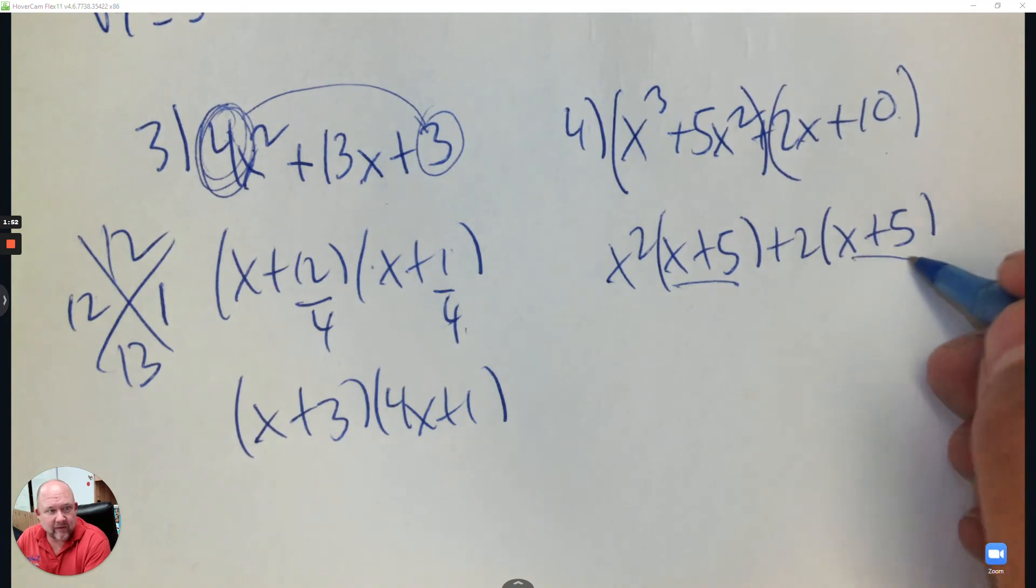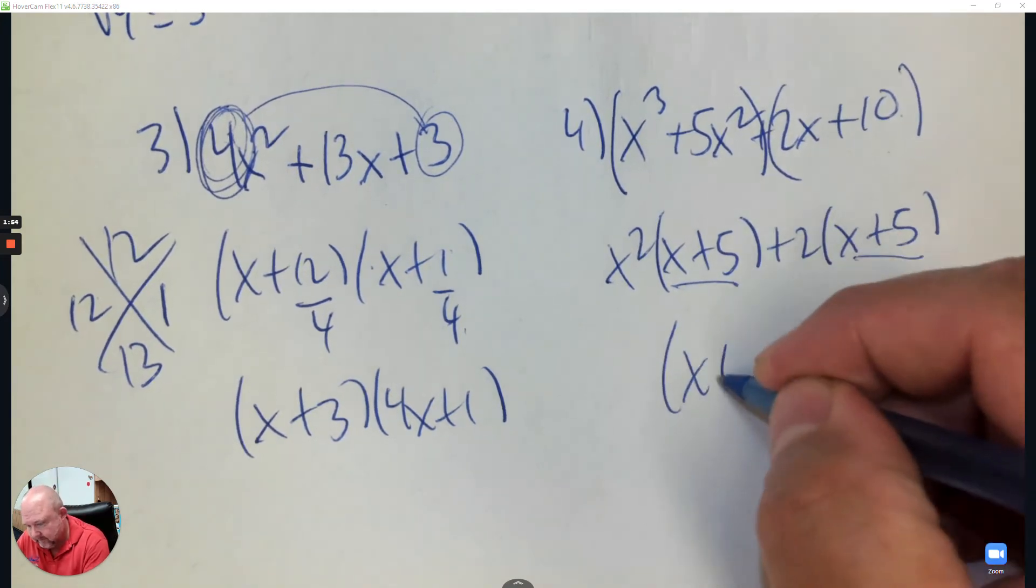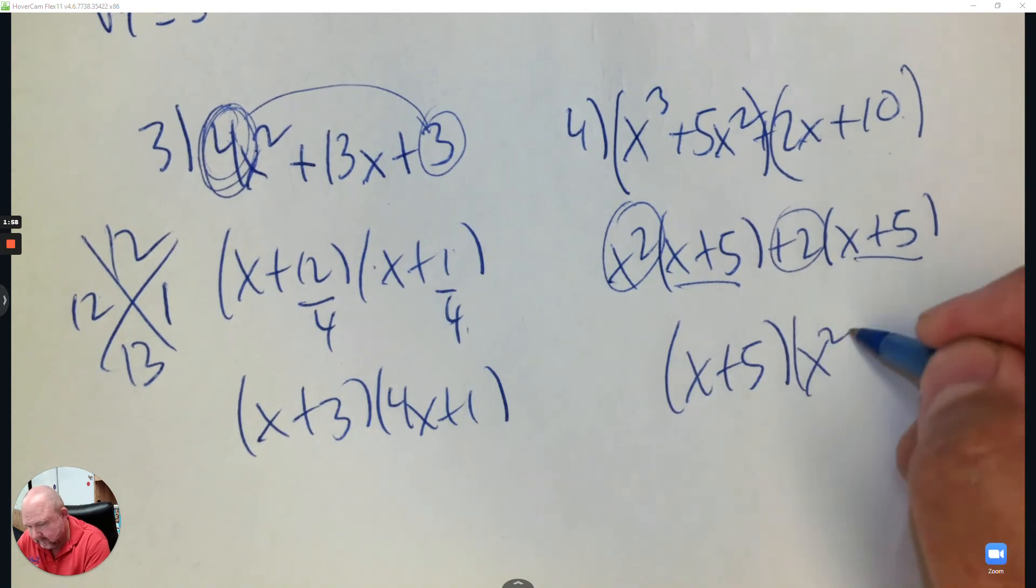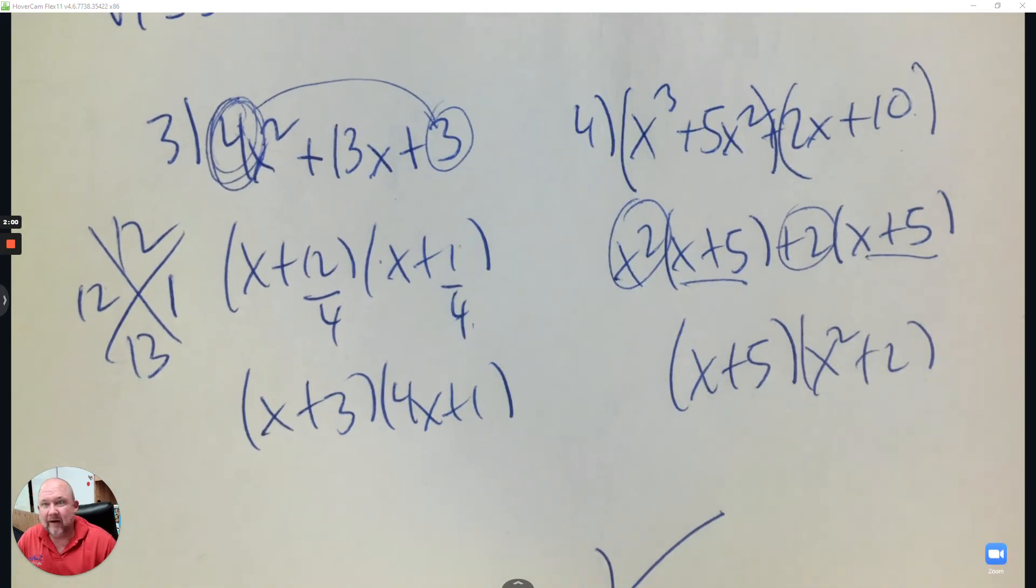Take the factor they both share, write it, and then what's left over, write it, and you did it. All right, are you ready? Practice. Those are the ones you're going to see on the quiz.